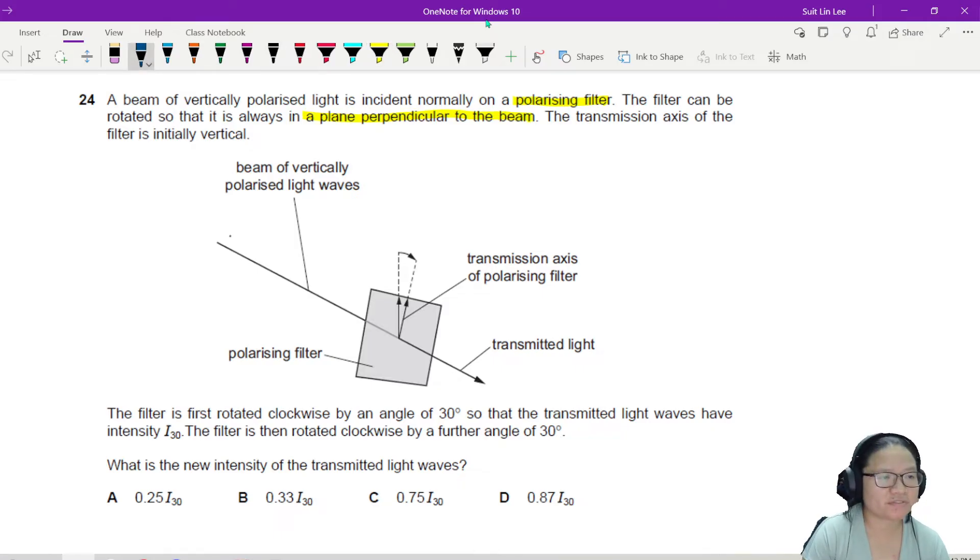So we have the polarized light like this. They are already polarized vertically. So by the time it reaches here, this is the direction of oscillation of the wave.